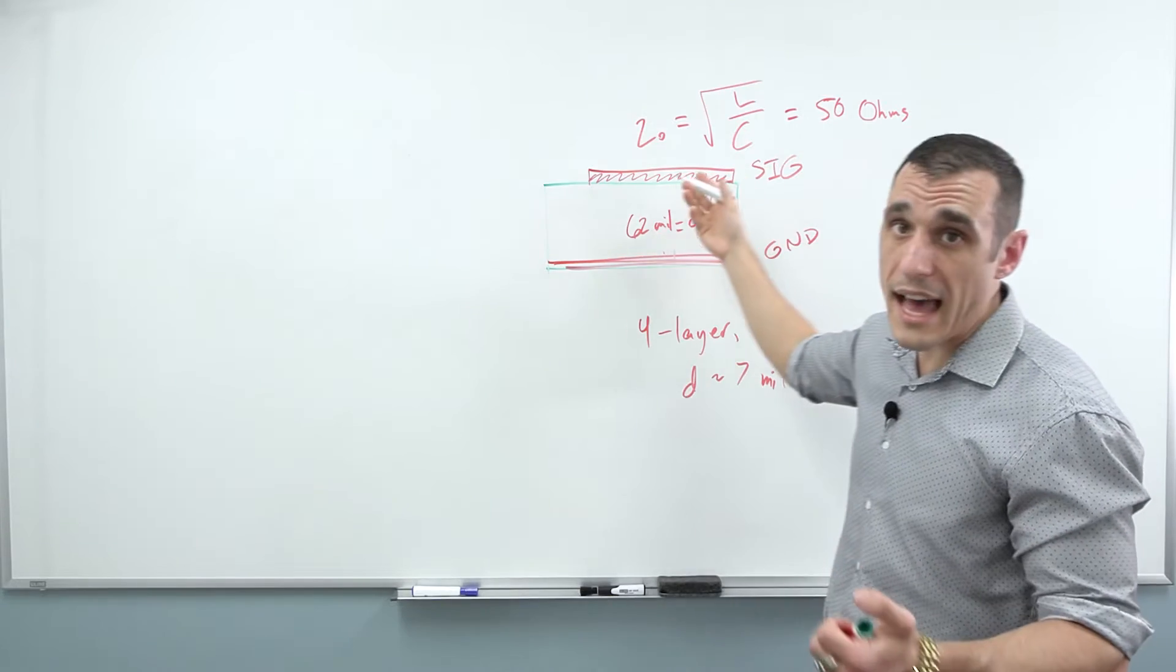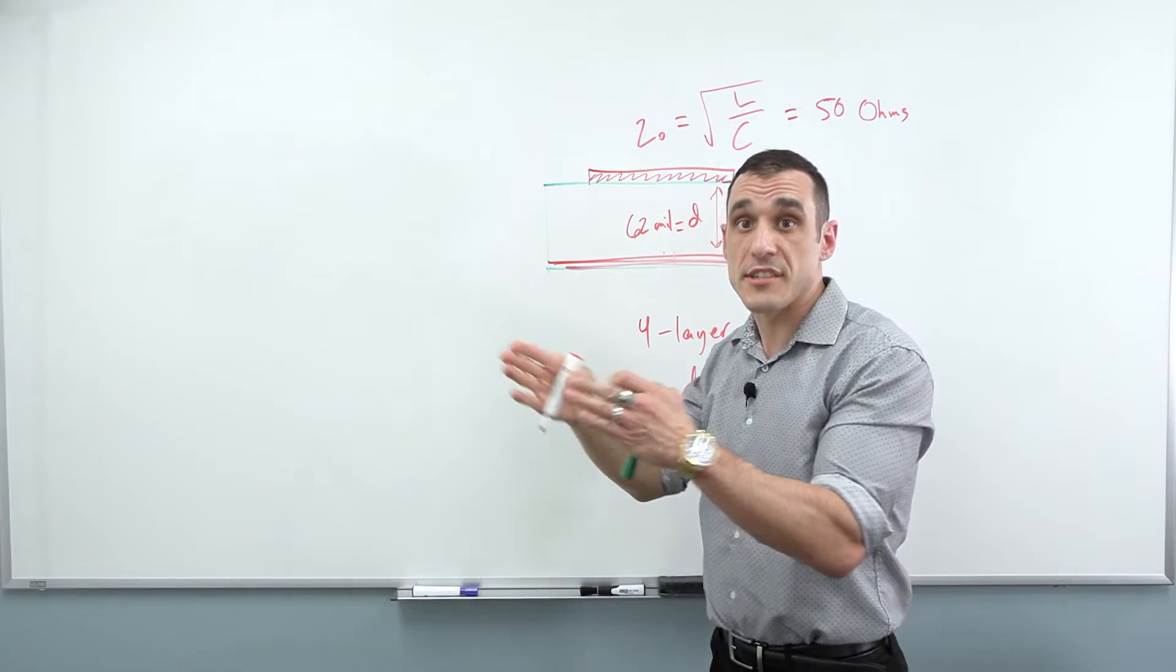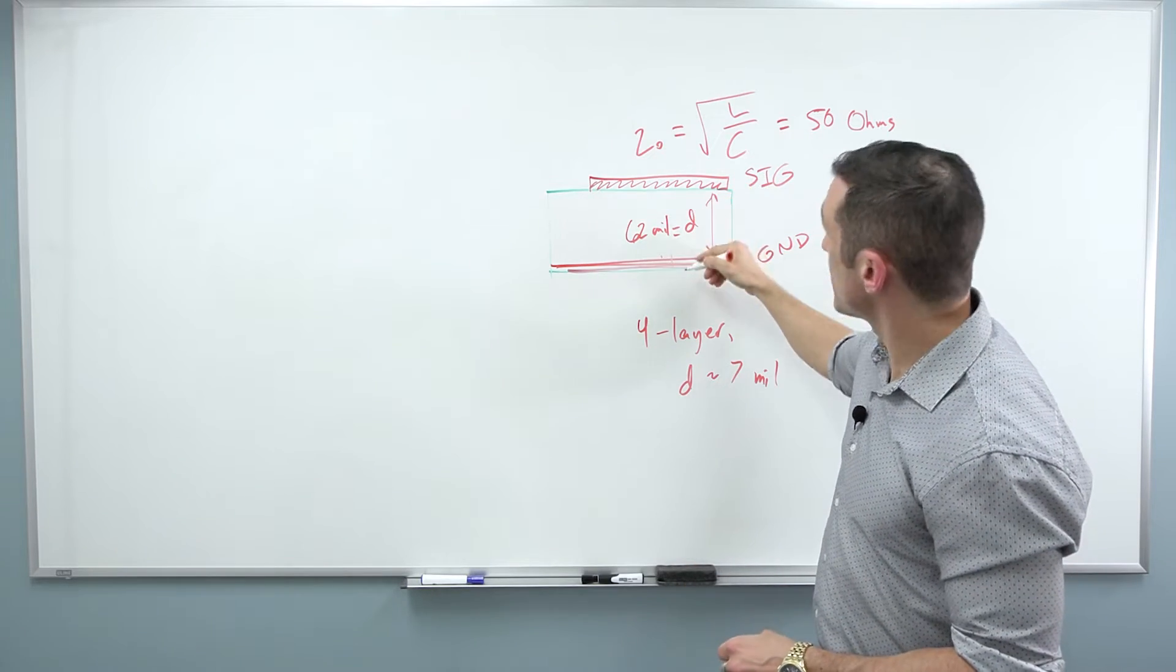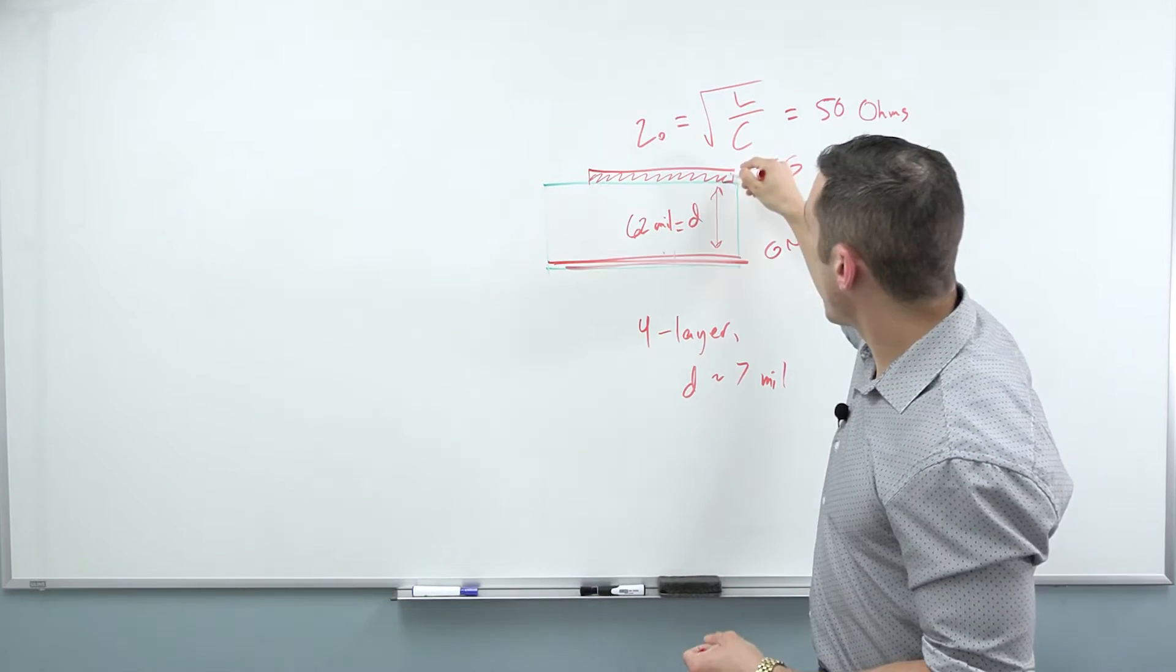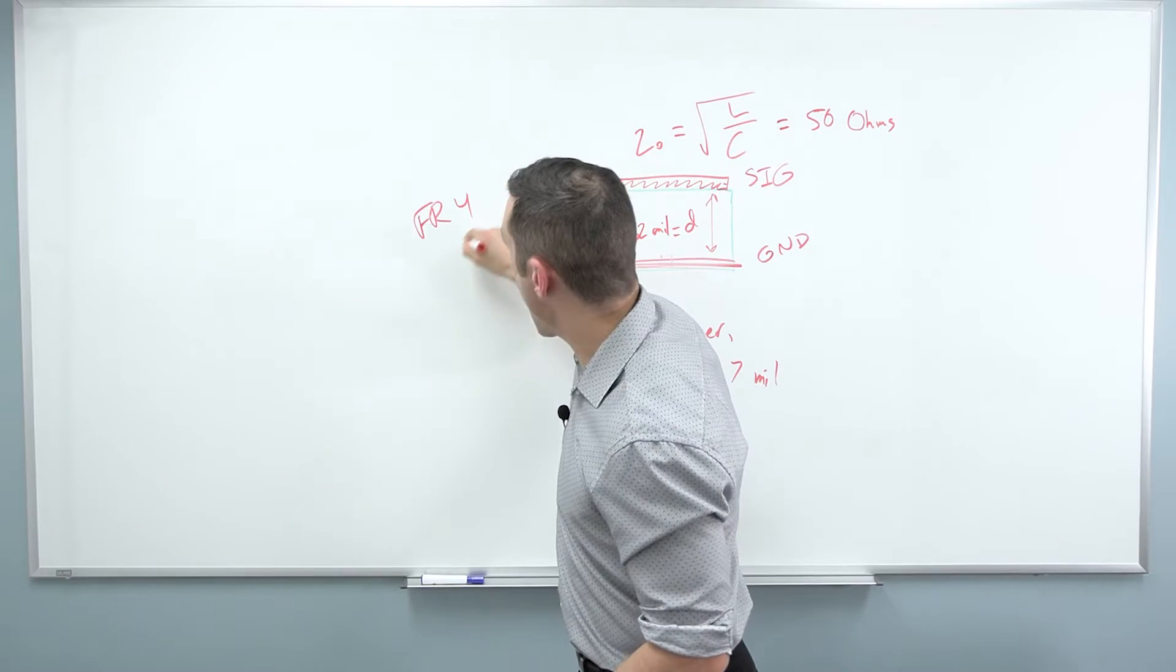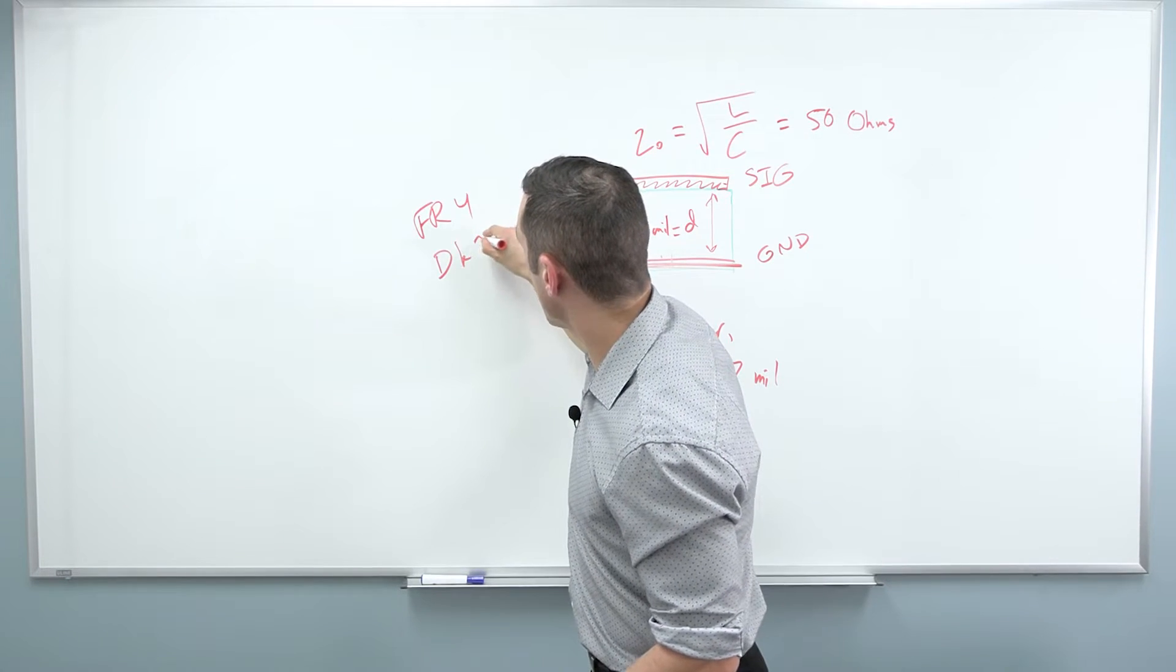Well, how do we do that on a PCB? We have to make the traces much wider. So in order to do that with a two-layer board, if this distance is, let's say 62 mils, up on the top layer, if we're dealing with FR4 that has a DK of about 4.2, so maybe a high-speed laminate,